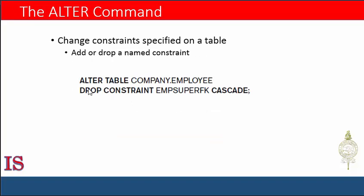We see here that we can ALTER TABLE COMPANY.EMPLOYEE and DROP a constraint named EMPLOYEE_SUPERSSN_FK CASCADE.